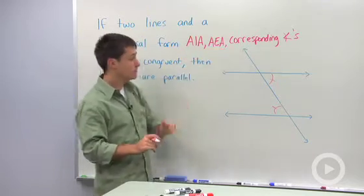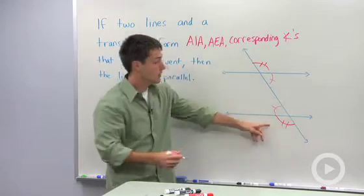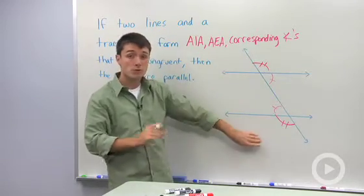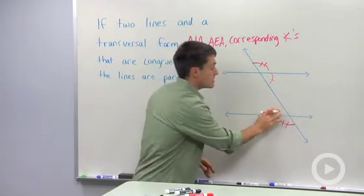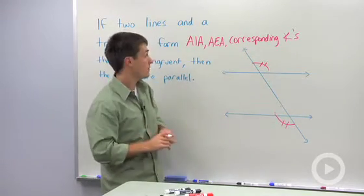If you have alternate exterior angles, that is these two angles right here that are alternate exterior, if those two are congruent you don't even need to know about these interior ones. That's enough to say that they're parallel.